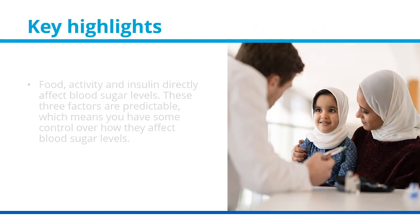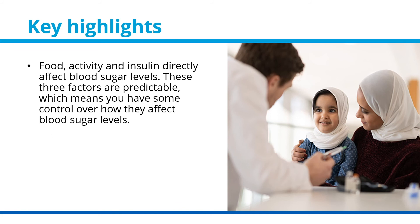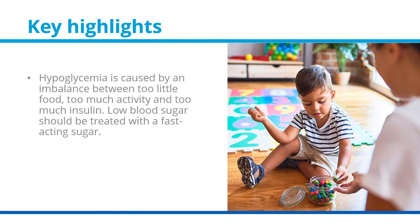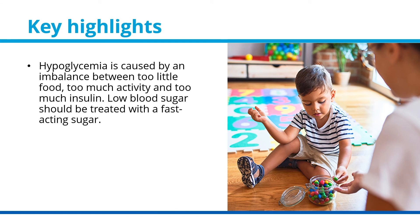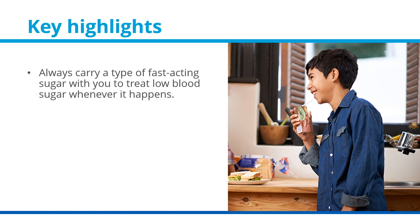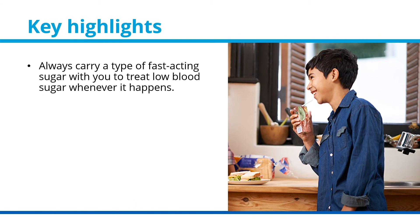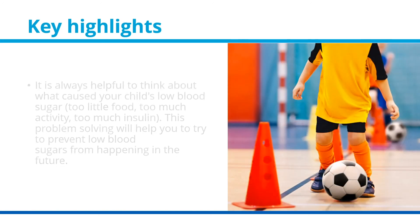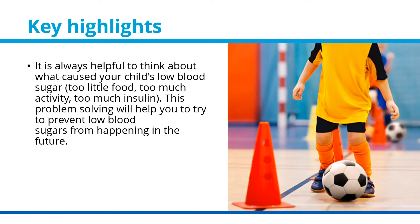In summary, food, activity, and insulin directly affect blood sugar levels. These three factors are predictable, which means you have some control over how they affect blood sugar levels. Hypoglycemia is caused by an imbalance between too little food, too much activity, and too much insulin. Low blood sugar should be treated with a fast-acting sugar, and you should always carry one with you. It is always helpful to think about what caused your child's low blood sugar — was it too little food, too much activity, or too much insulin? This problem-solving will help you prevent low blood sugars in the future.